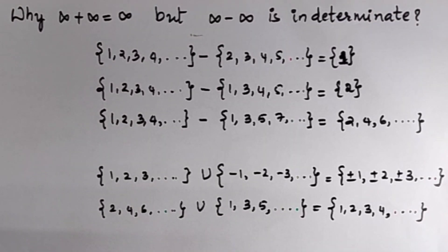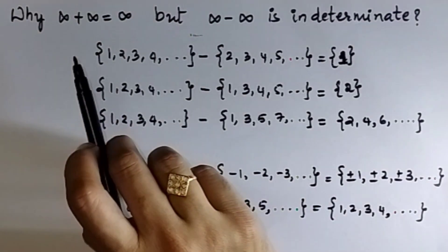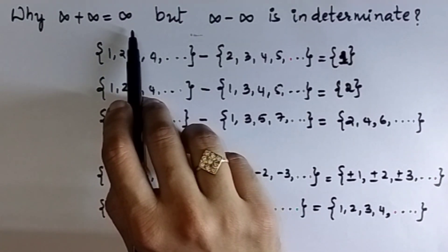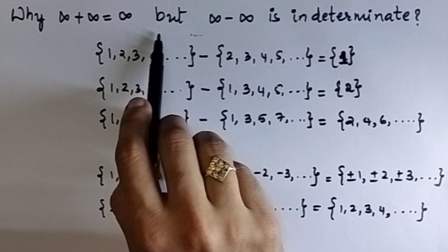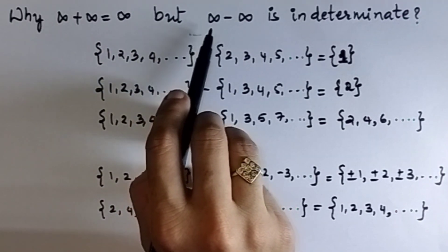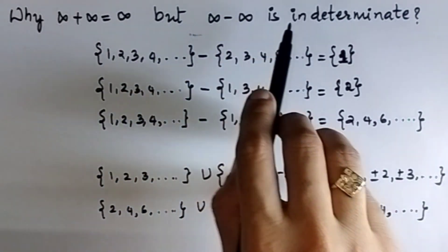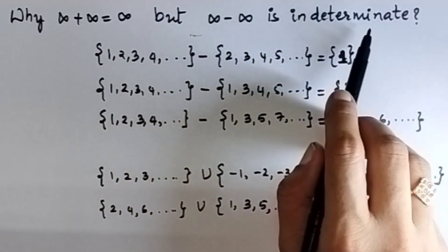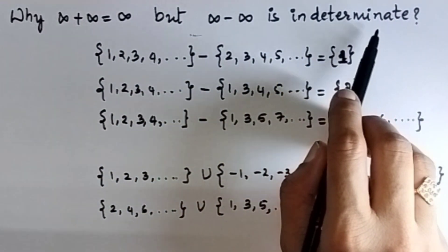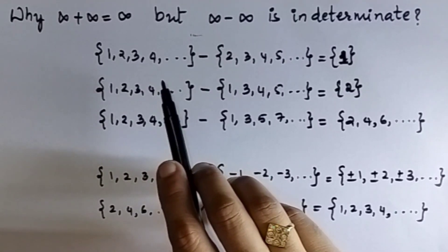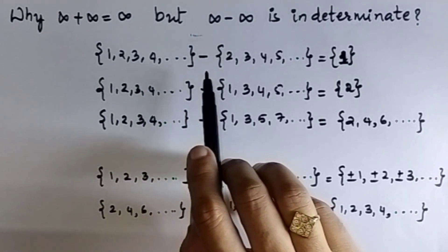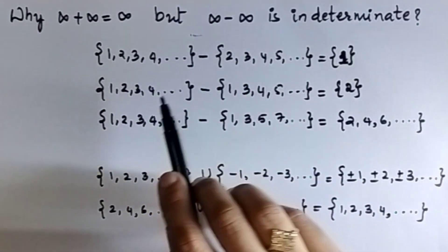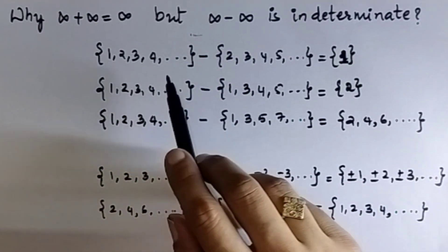In this video, I will explain why infinity plus infinity equals infinity, but infinity minus infinity is indeterminate. I will consider examples of sets to illustrate this.